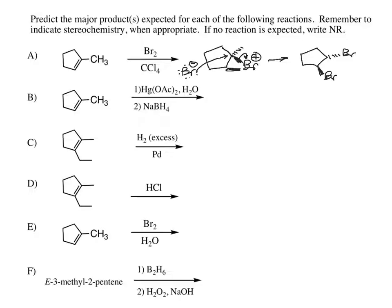Anti-addition means the two bromines are going to end up trans to each other. We had a methyl group originally on this carbon, so if the bromine on that carbon comes in as a dash, that means the methyl group gets pushed out as a wedge. So this is one product, and of course it doesn't matter which bromine is the wedge and which is the dash. We always want to indicate this is racemic because we just formed a chiral product from an achiral starting material.